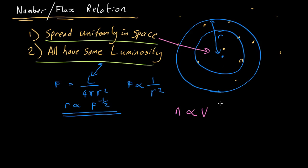The bigger r, the larger the volume, so that's equal to 4 thirds pi r cubed, the volume of a sphere. So the number we can see is going to be proportional to r cubed.